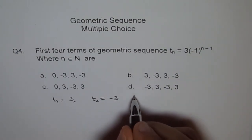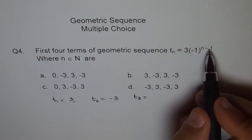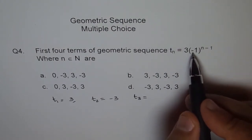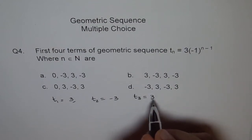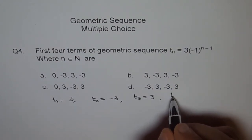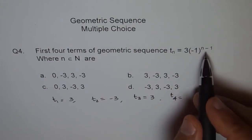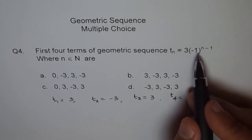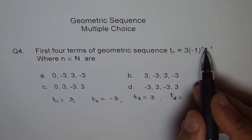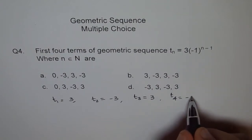How about T3? 3 minus 1 is 2, and the square of a negative number will be positive 1, and therefore we get 3. And then T4: 4 minus 1 is 3. An odd power will give us negative 1, and therefore minus 3.